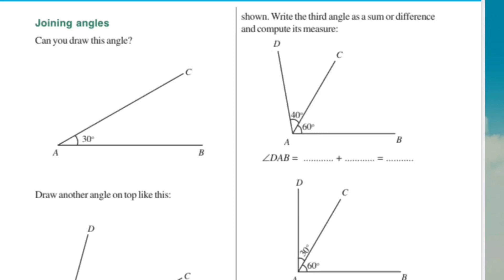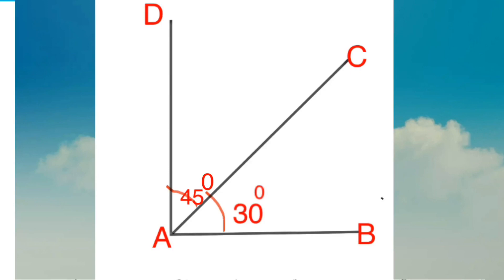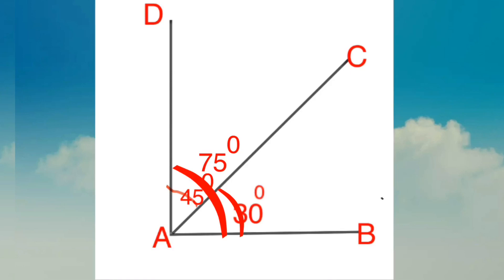Here, the ordered part is to add and subtract. Suppose we use this figure. In this figure, angle DAB is 75 degrees. Then angle CAB is 30 degrees. Then calculate the angle DAC. How do we calculate? 75 degrees minus 30 degrees — that is 45 degrees.